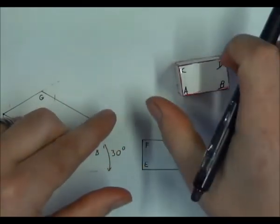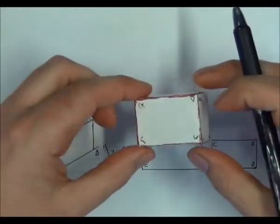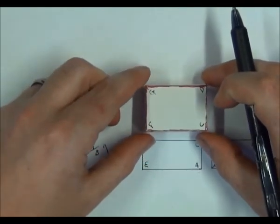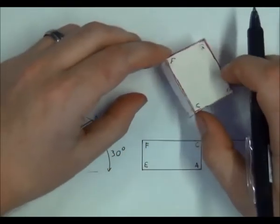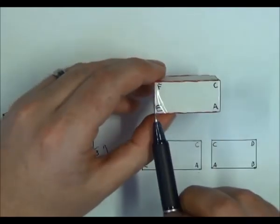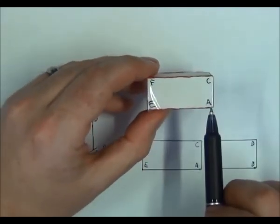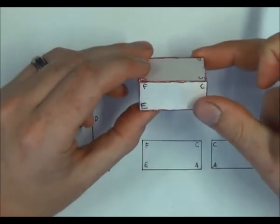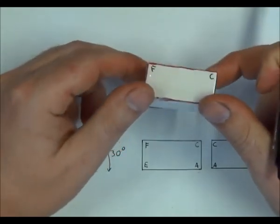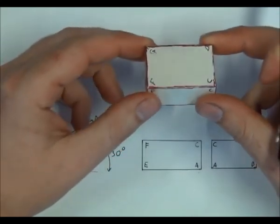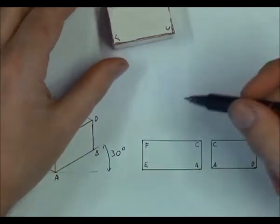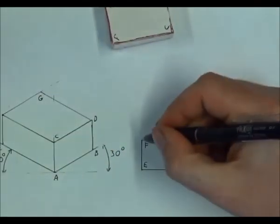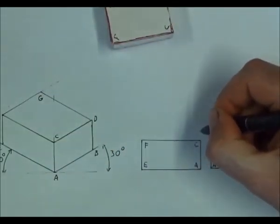Above the main view, I am going to draw a projected view of the top of this box. You will notice the width of the box — the length of line EA — hasn't changed as I rotated this box. That line still remains the same length, meaning my top view must have the same width as my main view.